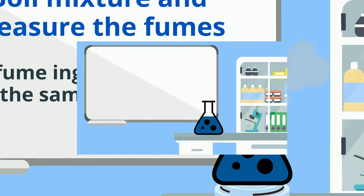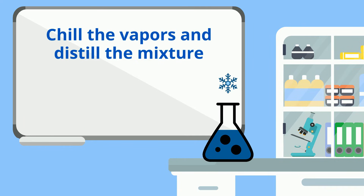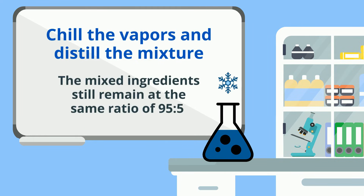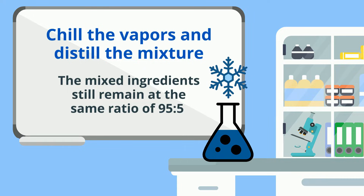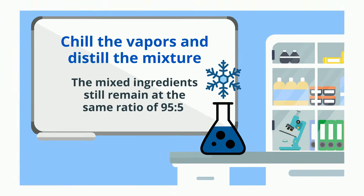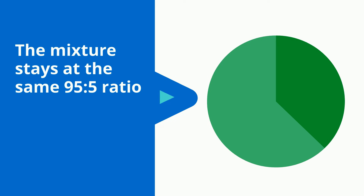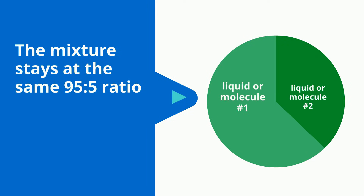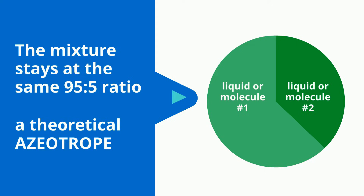When we further chill those vapors and distill the material, it again will have the same 95 to 5 mixture ratio. In fact, no matter what we do, the mixture always stays at the 95 to 5 proportions. This means we have created a theoretical azeotrope.